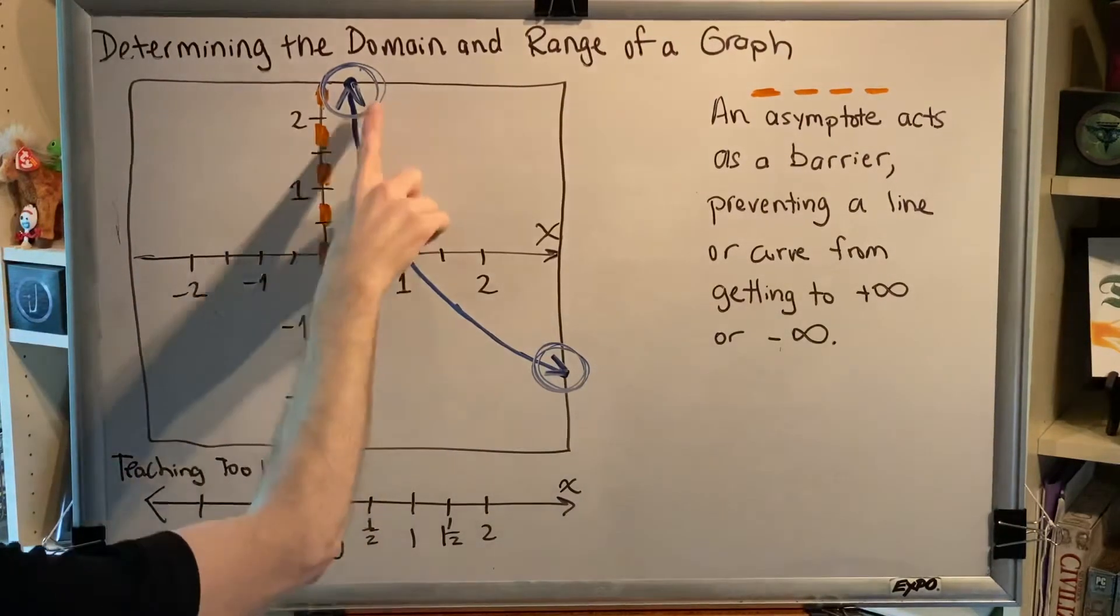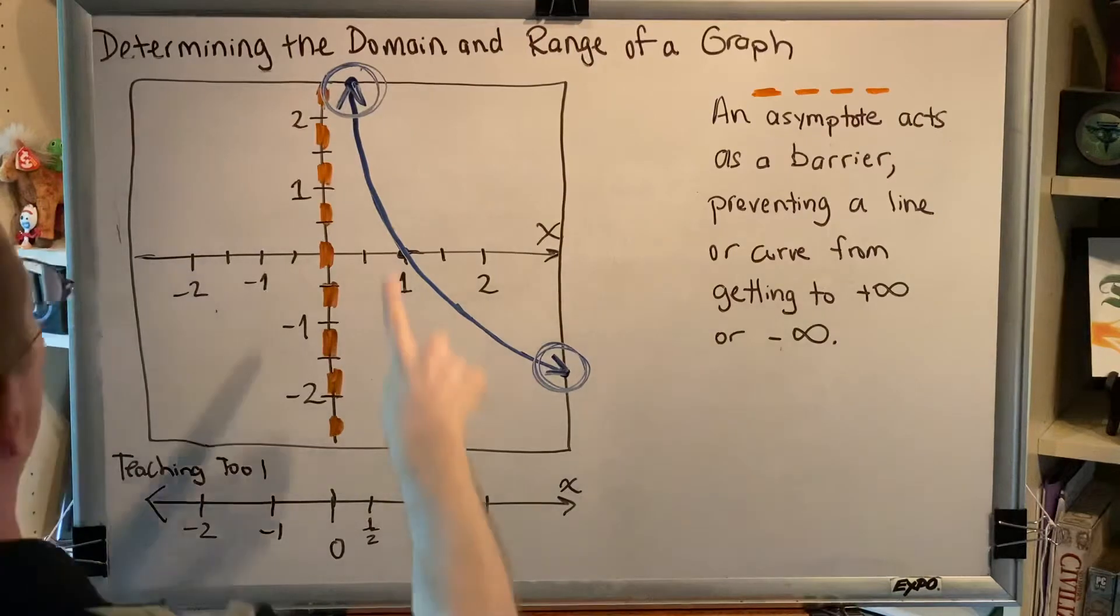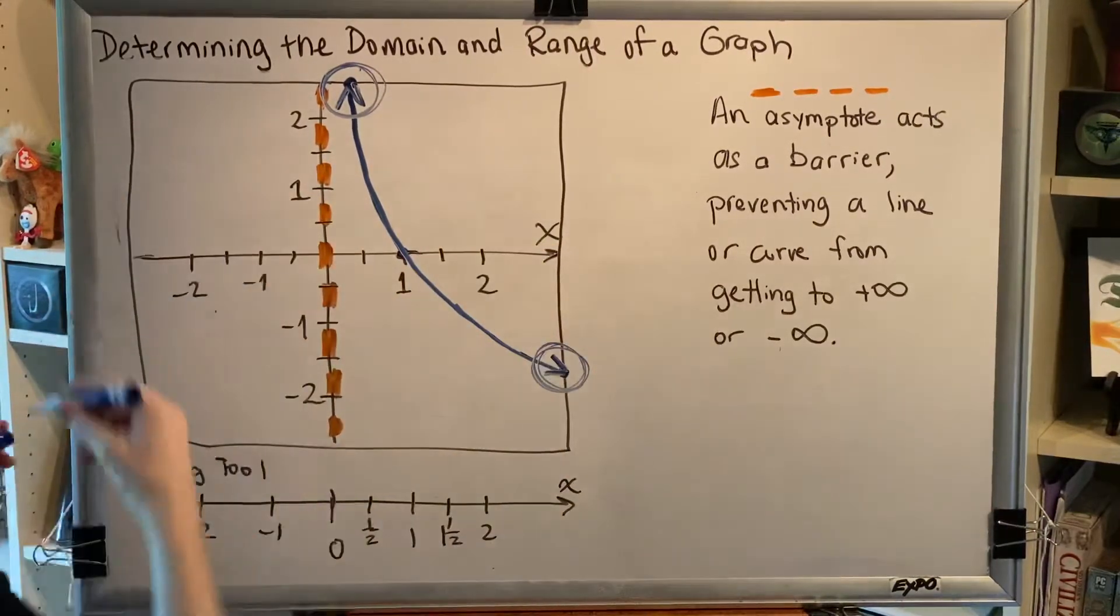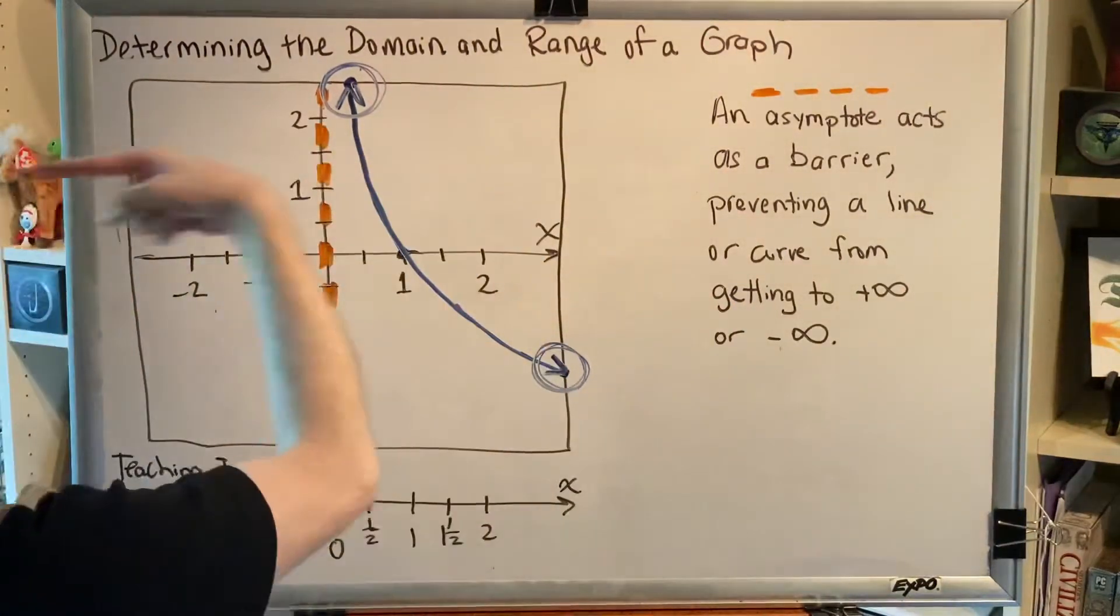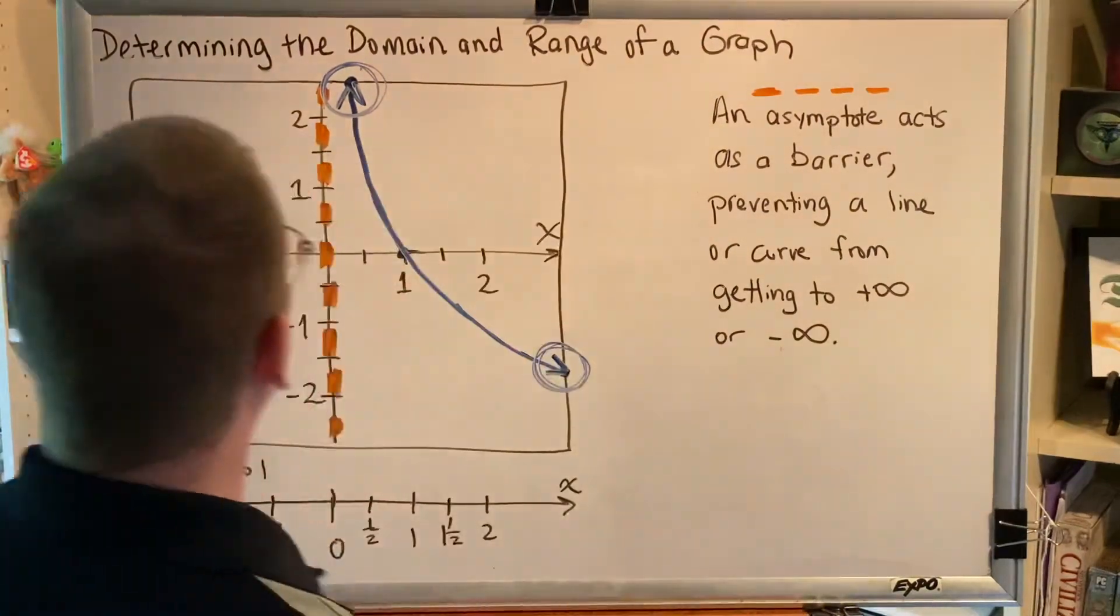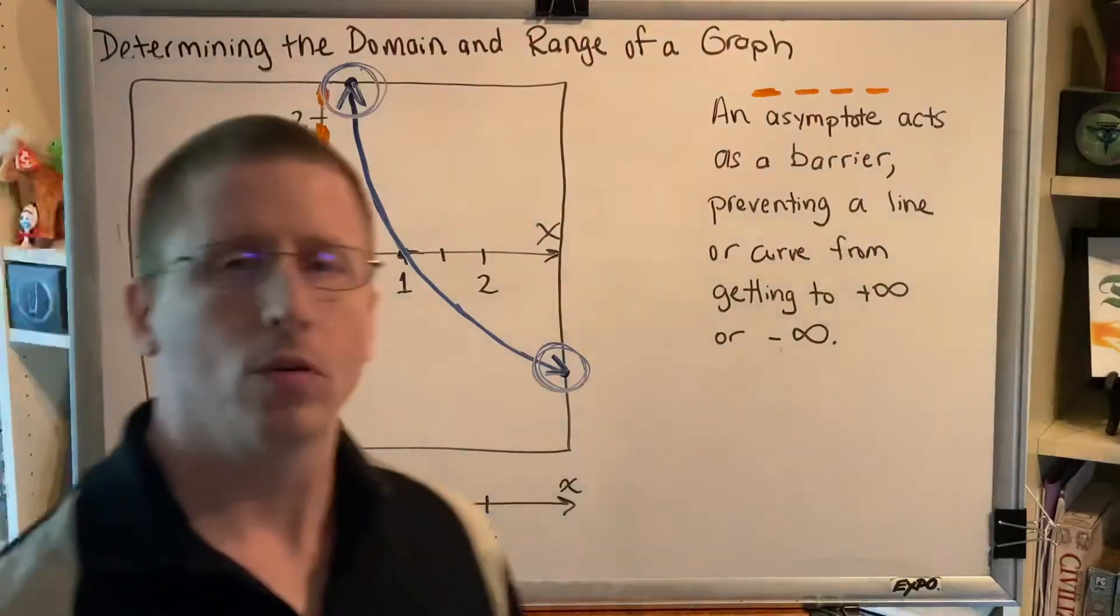We need to figure out for domain what is represented by these arrows. This arrow right here is pointing up and left. Which one do we care about for domain? Left. So this arrow is actually representing a negative infinity. There's just one problem: it wants to get to negative infinity but there's something blocking its path, and that would be this asymptote.